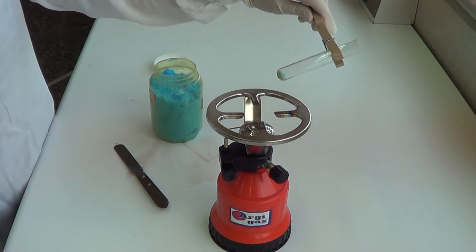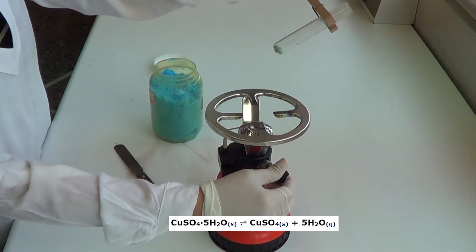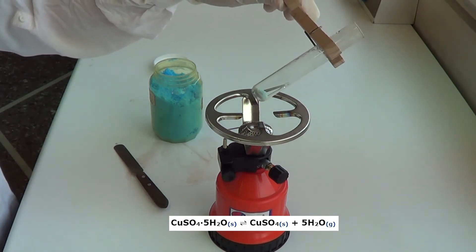We observe that during heating, the hydrated copper sulfate changes color from blue to white, while drops of water appear on the walls of the test tube.